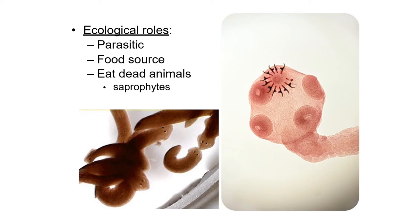Now, the ecological roles of these animals. Parasitic — parasitic ka matlab those animals which are dependent for food on other living organisms. These animals are called parasites. They have suckers, and their food source is blood from the host.